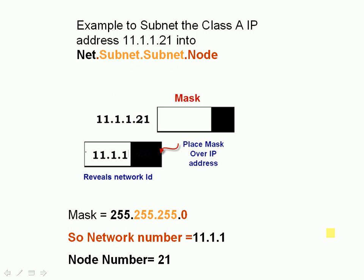Let's look at an example with class A address 11.1.1.21. We're going to subnet it into network, subnet, subnet, node using our paper mask. We place that mask over our number, getting rid of the last byte, and what pops out is 11.1.1 — that is network number 11, subnet number 1.1. We don't differentiate between the network and the subnet, so we just call it network 11.1.1. The node address is 21, which is the part hidden by the mask. So the mask reveals our network address, and by doing so, it also reveals our node address.